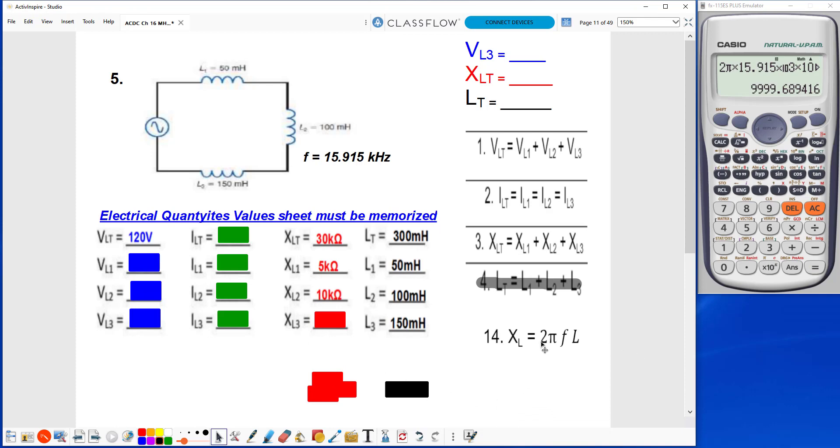And then finally to find XL3, it's going to be 2π times F times L3. So I'll go up here and I'll change the 100 to 150 millihenries. Get rid of the 100, put 150 in there, and that would round up to 15. Now that I have my XL values, I can find my IL value.